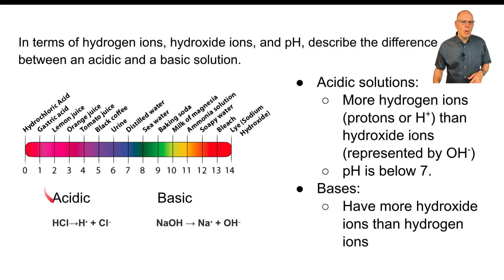In bases, there are more hydroxide ions than hydrogen ions. So if you dissolve sodium hydroxide in water, you wind up with a lot more hydroxide ions, and that pushes the pH in this direction. pH is above 7.